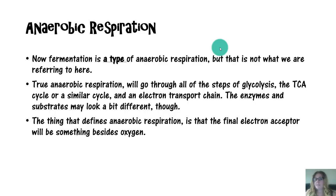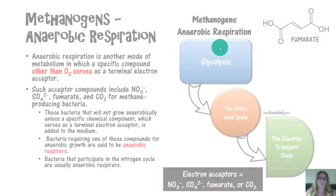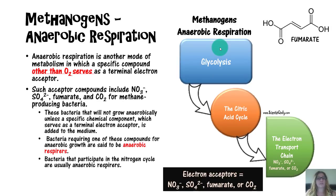Fermentation is a type of anaerobic respiration, but that is not always what we are referring to. True anaerobic respiration goes through all steps of glycolysis, the TCA cycle or a similar modified cycle, and an electron transport chain — though the enzymes and substrates may look different. The thing that defines anaerobic respiration is that the final electron acceptor is something besides oxygen. For example, let's look at methanogens — such acceptor compounds include nitrate, nitrite, sulfate, fumarate, and carbon dioxide for methane-producing bacteria.